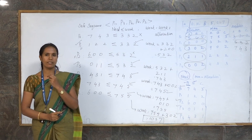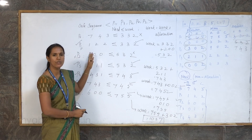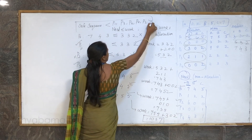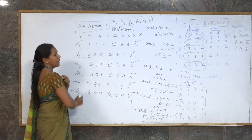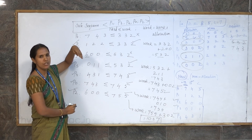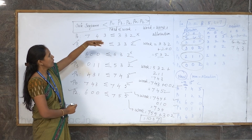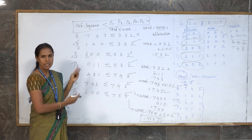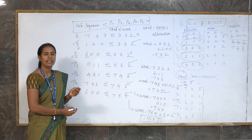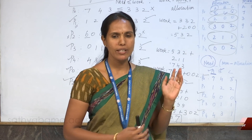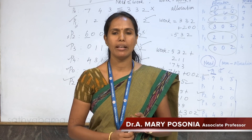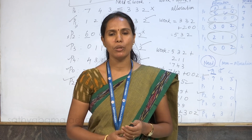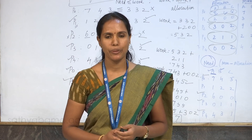Once the system can generate the safe sequence, the system is in the safe state. Every process has come to the completion stage — from P1, P3, P4, P0 to P2 — proving that the system does not suffer from a deadlock situation. Hope you understood deadlock avoidance based on Banker's algorithm. In the next video, we will discuss deadlock prevention. Thank you.